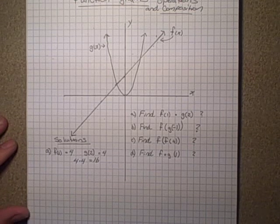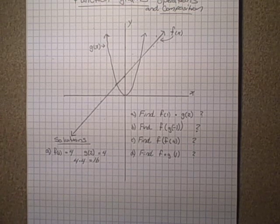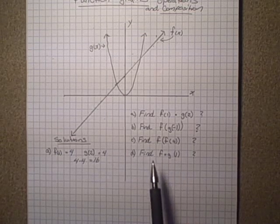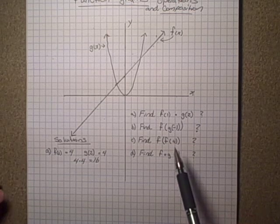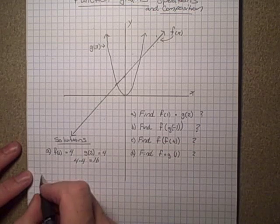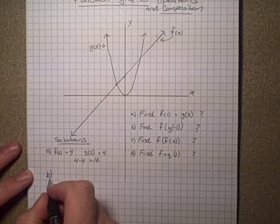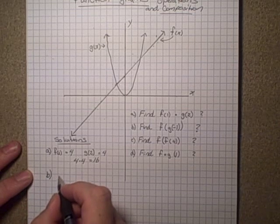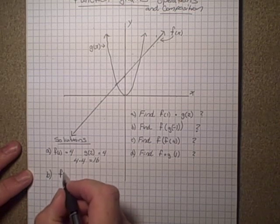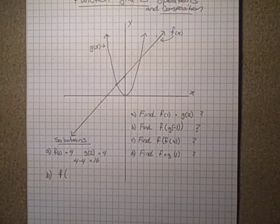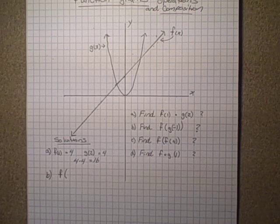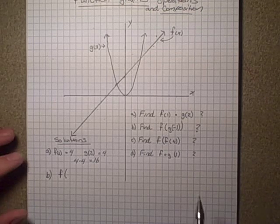Now here we have a composition example and what we have to do is work out what g(-1) is first and then compose it into f. So in b what we're looking at is f of whatever g(-1) is.